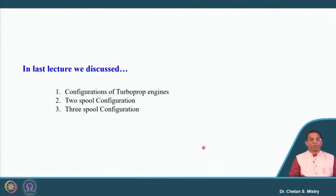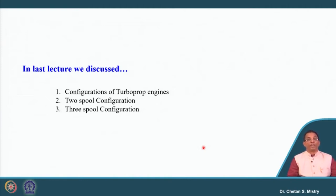In detail, we discussed about the two-spool configuration and also the three-spool configuration. We realized there are different kinds of configurations possible in terms of how the spools are connected with the compressor. For the compressor, some configurations use all axial flow compressors, some use a combination of axial and centrifugal compressors, and some use all centrifugal compressors.